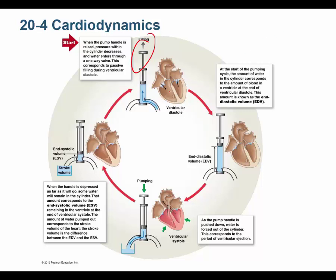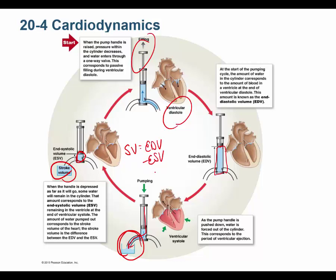This diagram shows passive filling during rest, giving us our end diastolic volume right before contraction. Then we contract and push most of it out, leaving a little blood called the end systolic volume. Everything pumped out is our stroke volume: EDV minus ESV.